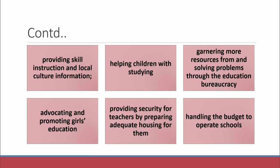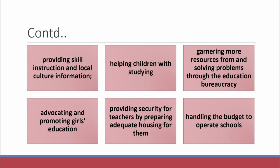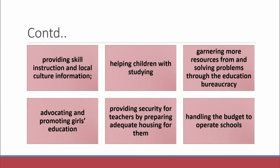By actively attending school meetings to learn about children's learning progress and classroom behaviour, and by providing skills, instructions, and local cultural information: school authorities are often not aware of skills and local culture specific to the community, so it is the role of community members to apprise school teachers and authorities about locally relevant skills. They should ensure this local culture is given due weightage in the curriculum. Community members can also help children with their studying after school hours and help solve problems through the education bureaucracy.